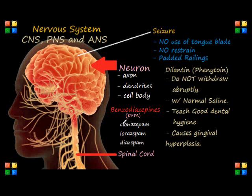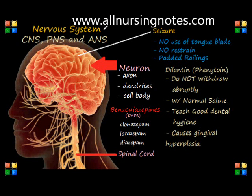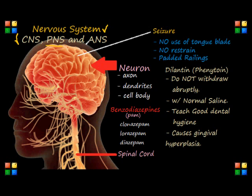Let's go back and talk about the nervous system. The nervous system includes our central nervous system, which is the CNS, the peripheral nervous system, or the PNS, and the autonomic nervous system, or the ANS.